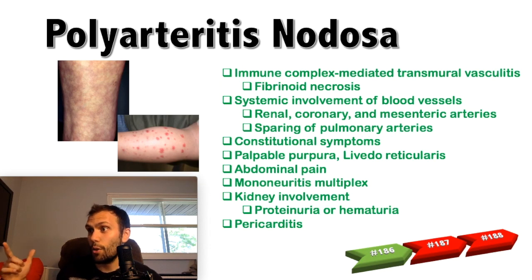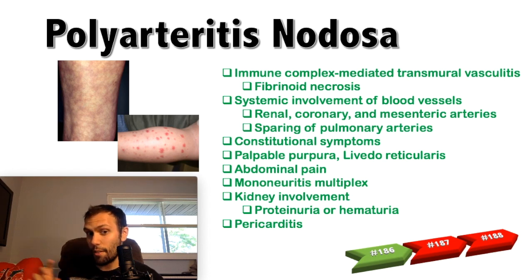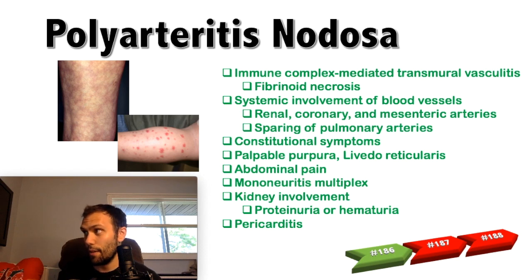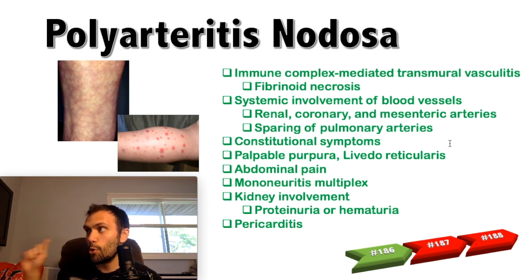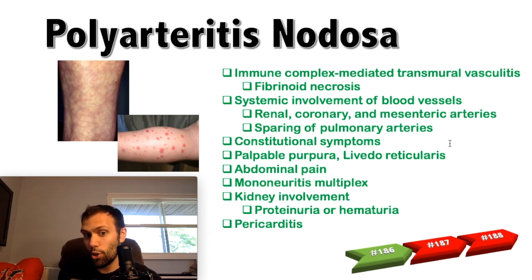Polyarteritis nodosa is a vasculitis that can affect everything. It is typically due to immune complexes affecting the entire wall of the blood vessel — transmural vasculitis resulting in fibrinoid necrosis. Two critical points: this disease almost always affects the kidneys, and it almost never affects the pulmonary circulation. Remember kidneys yes, lungs no.